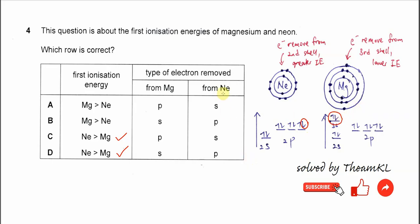Okay, so the answer is quite clear. From neon it must be from this p orbital, and from magnesium it must be from the s orbital. So the type of electron removed for neon is p, for magnesium is s. So the answer is D.